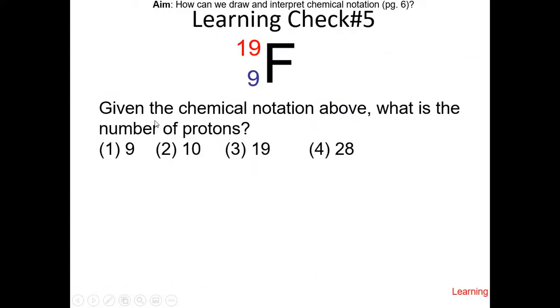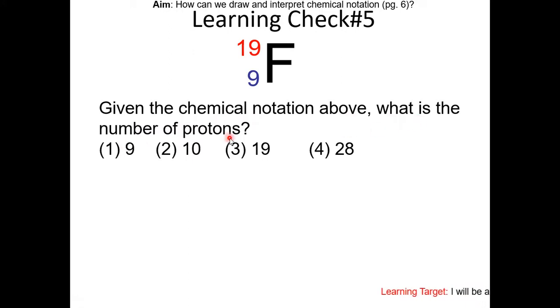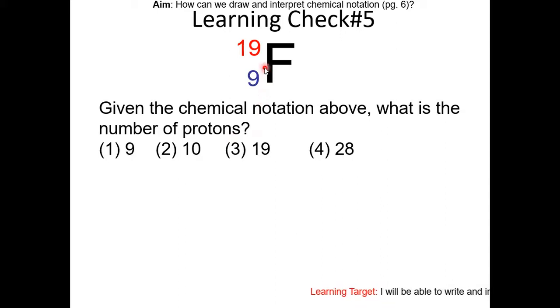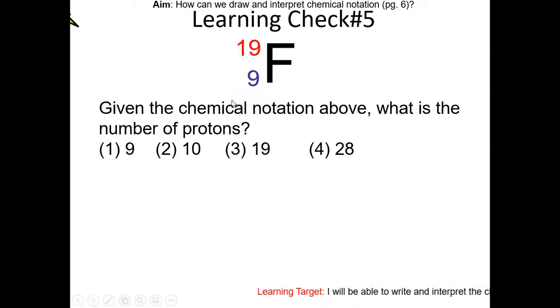Learning check number 5: given the chemical notation above, what is the number of protons? Pause the video and try this yourself. The answer: 9 is the atomic number, and that is the number of protons.